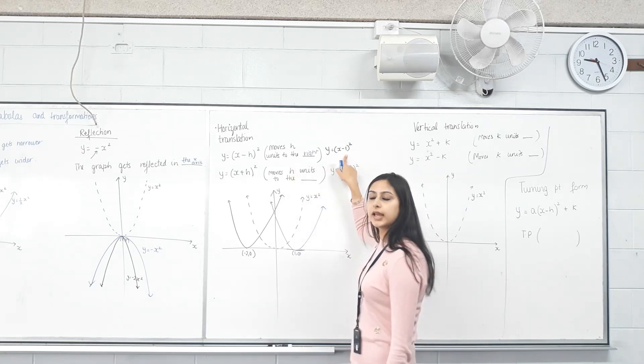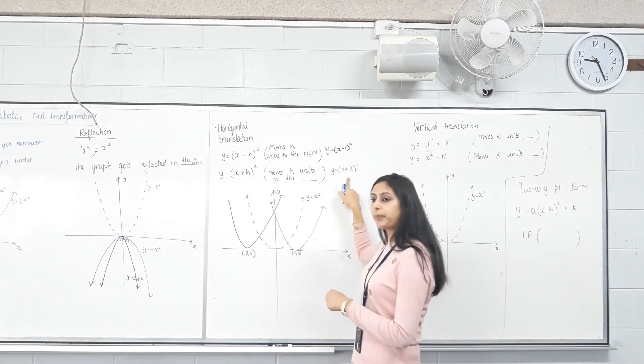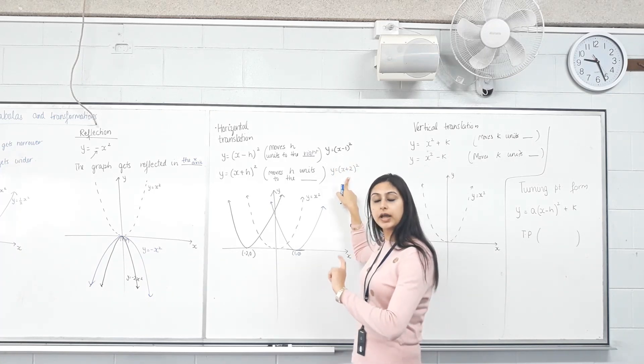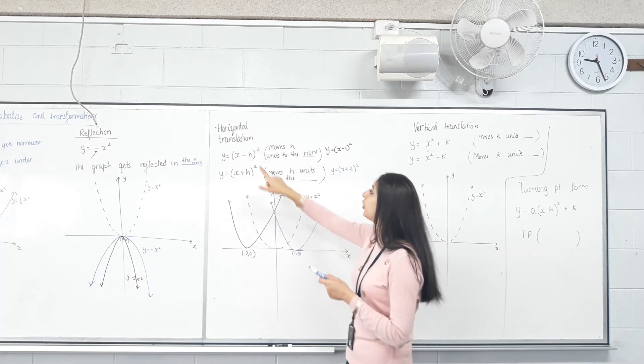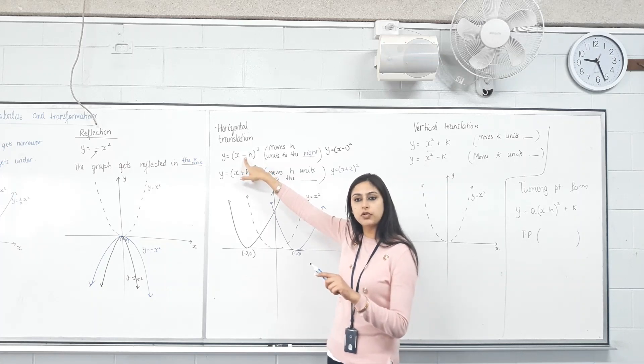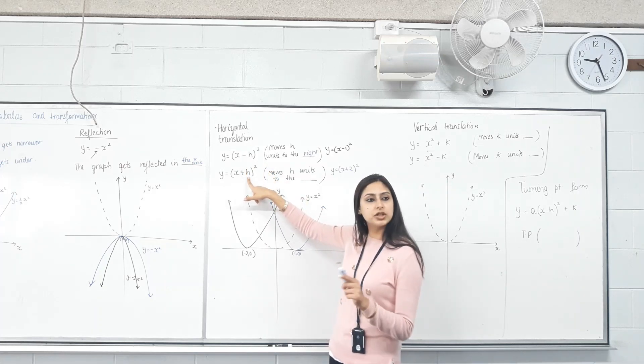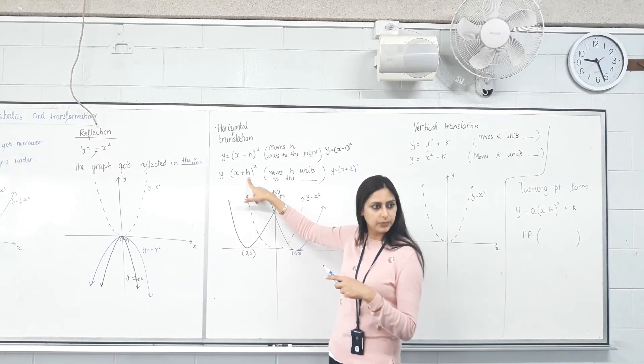If we subtracted 1, the x-coordinate of the turning point became +1. If we added 2, the x-coordinate of the turning point became -2. So the turning point became opposite of this sign. If you subtract h, the turning point becomes (h, 0). If you add h, the turning point becomes (-h, 0). Make sense?